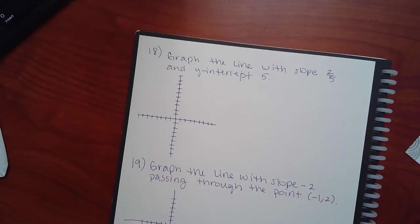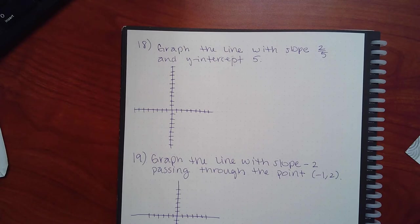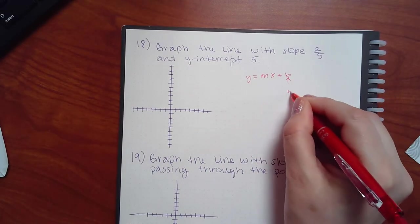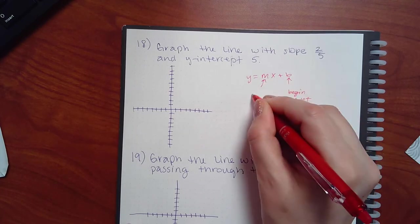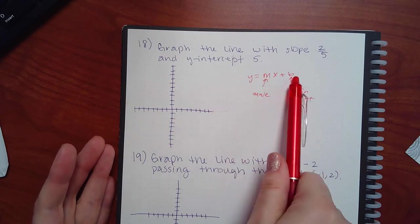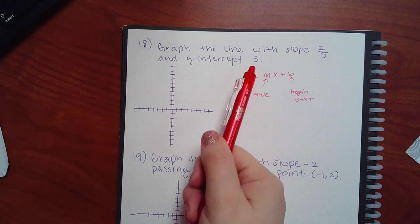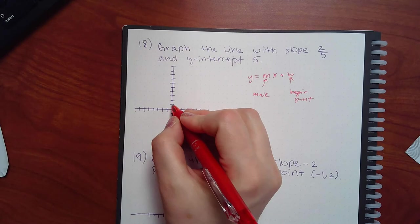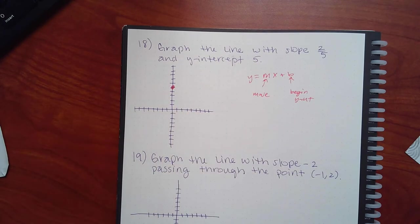Now: graph the line with slope two and y-intercept five. This is y equals mx plus b — nothing new. The b is where you begin, the y-intercept, and the slope tells you how to move. Always begin at the y-intercept point first. The y-intercept is five, so go up from the origin: one, two, three, four, five — that's your first point.